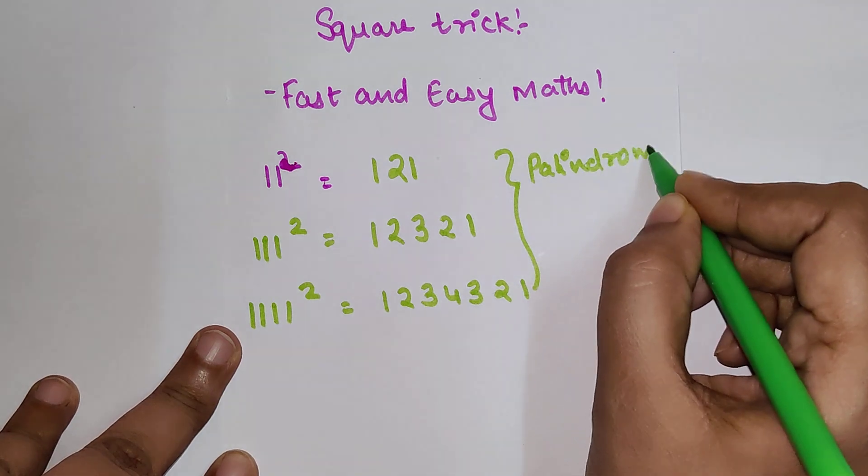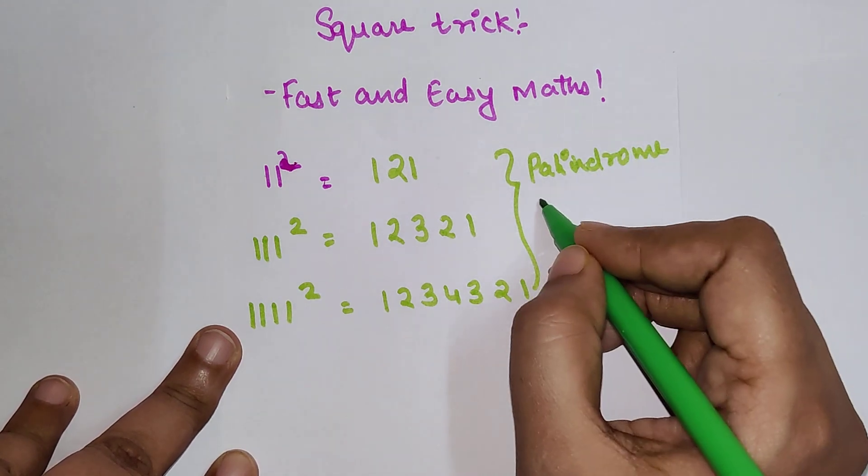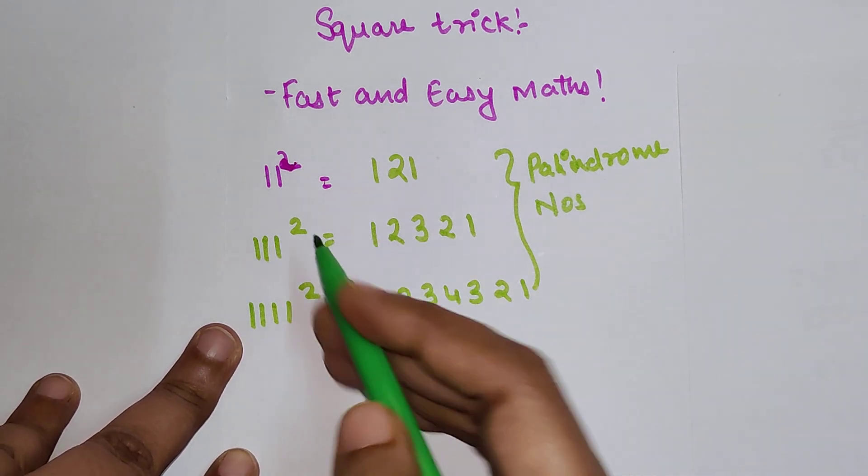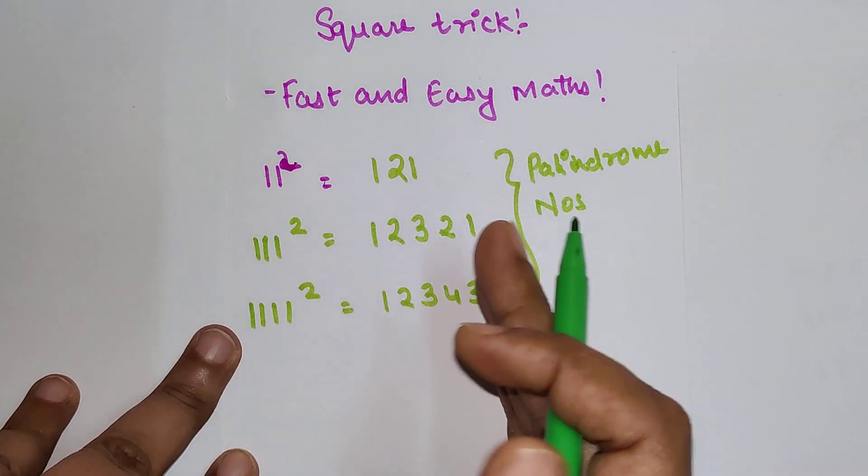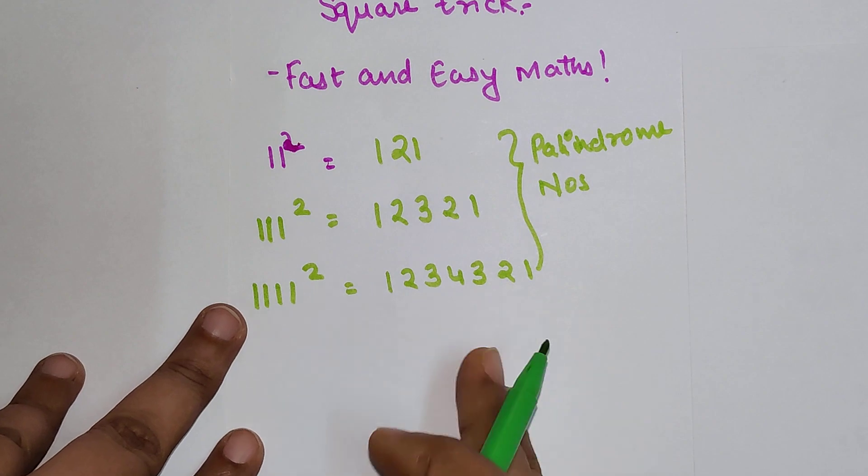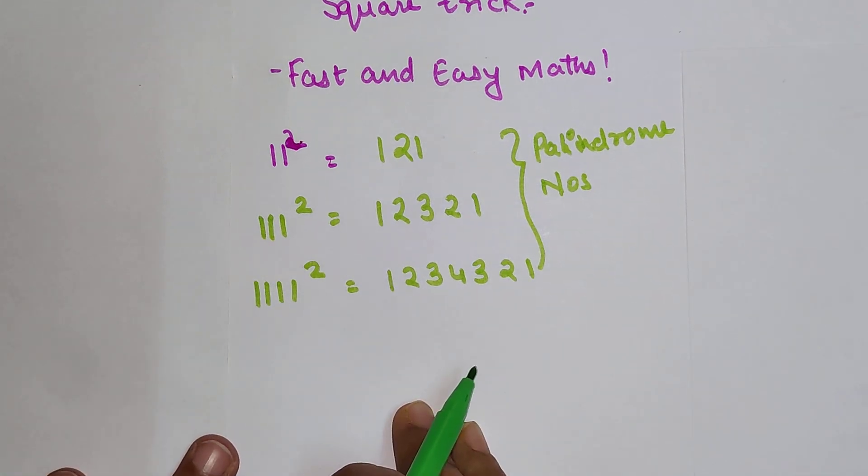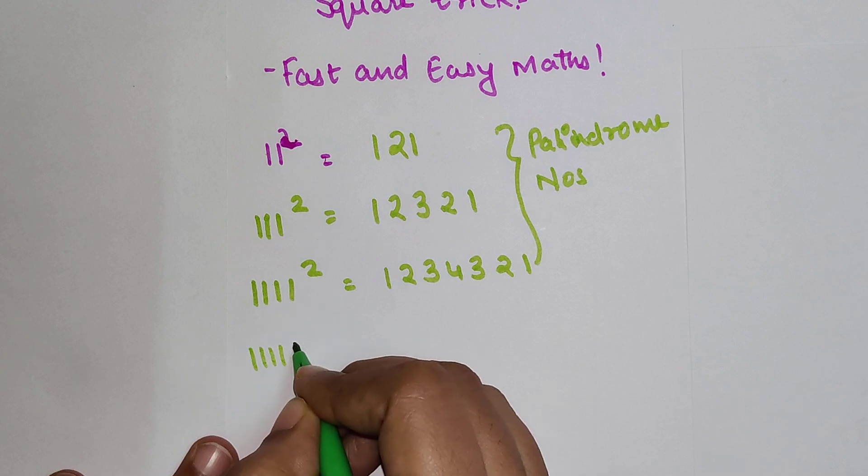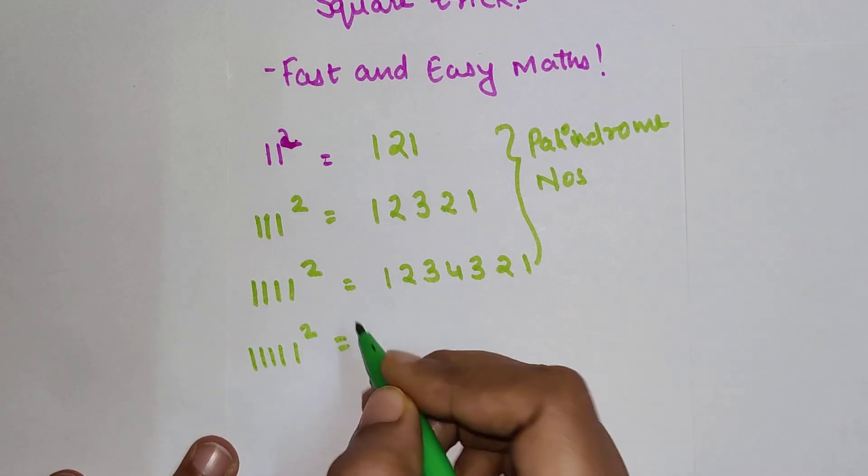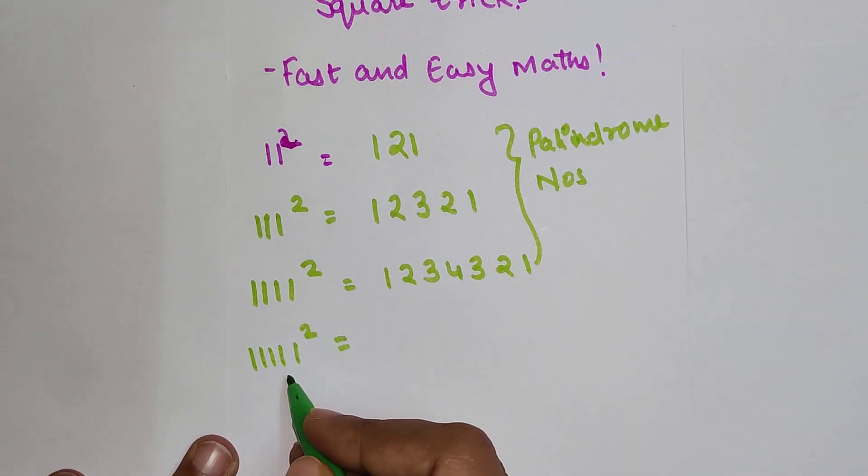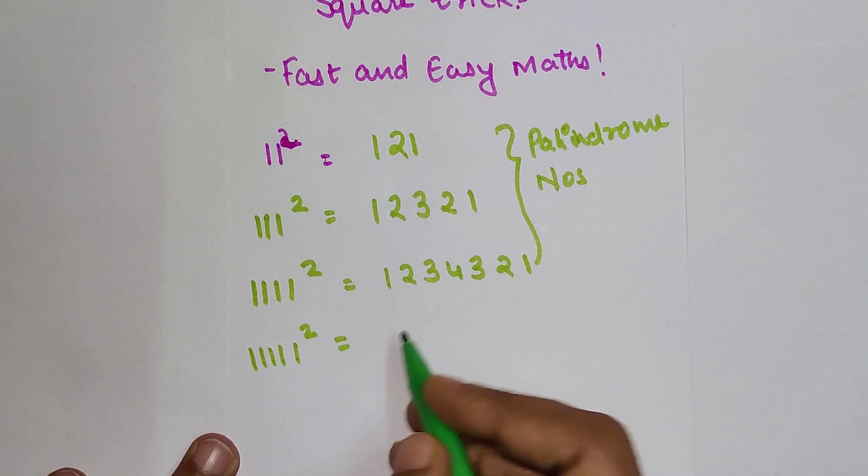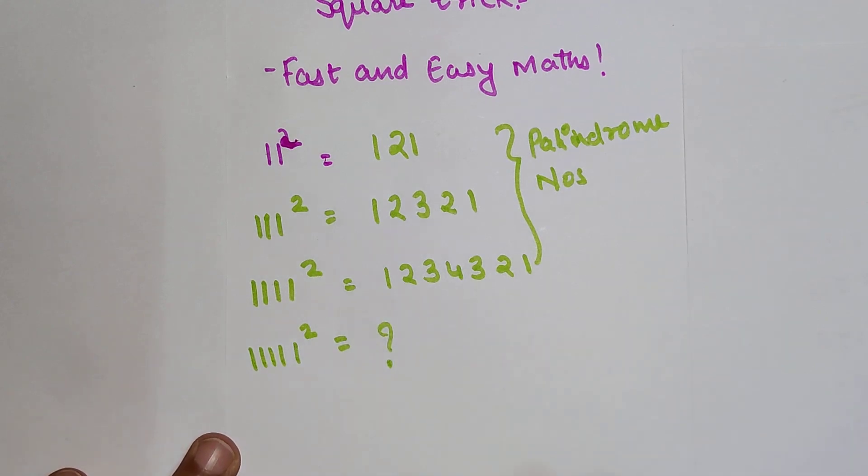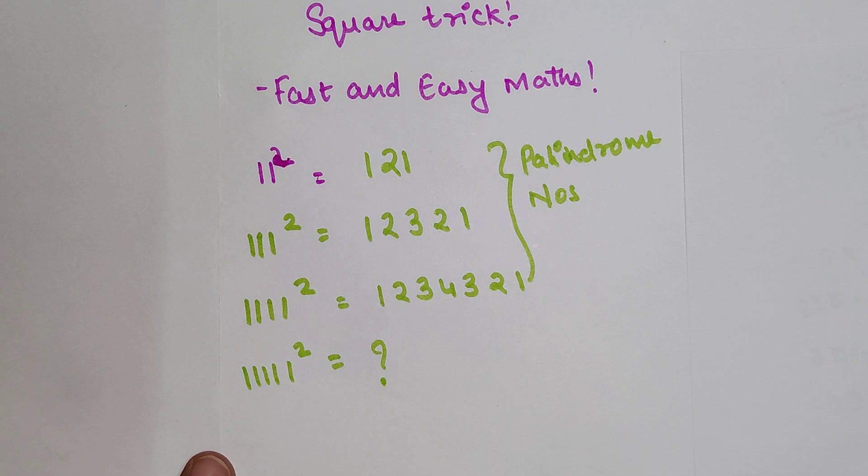Palindrome numbers means the numbers are reversing itself after one particular point. Okay, so now again you will have to tell me what happens to be the square of 11111. Do let me know your answers in the comment section. So that's it for today.